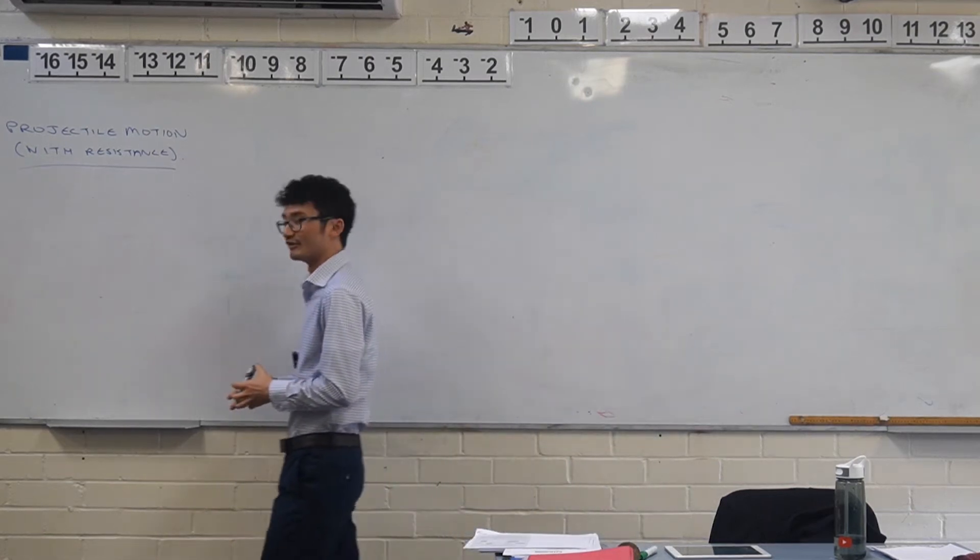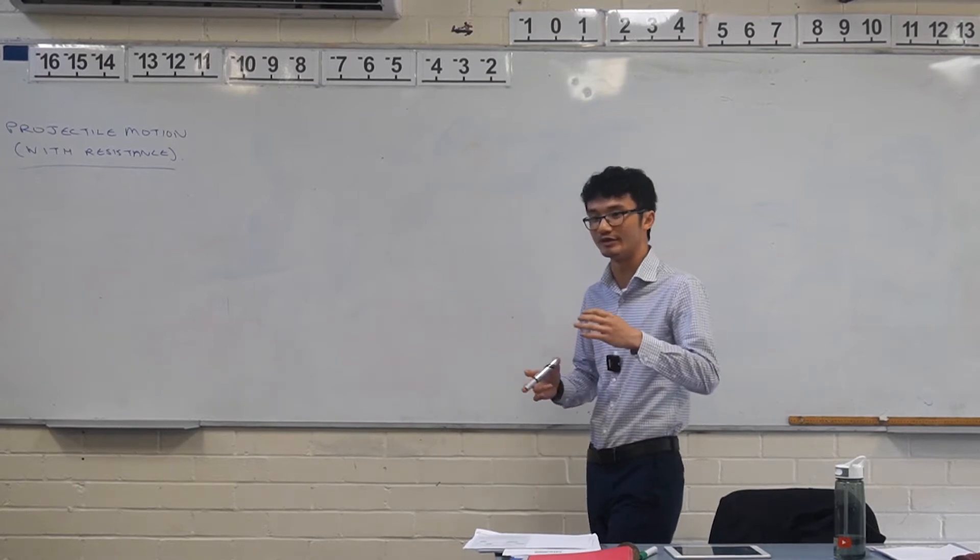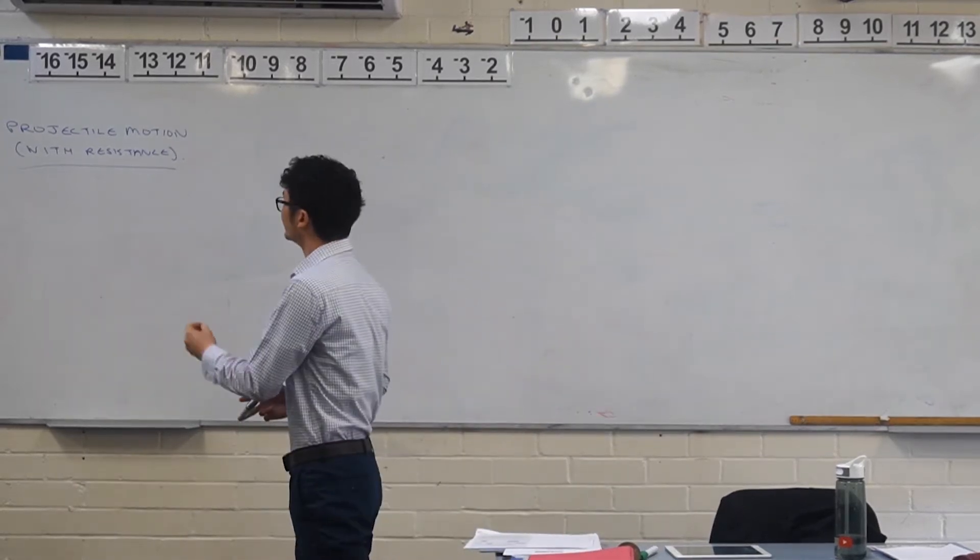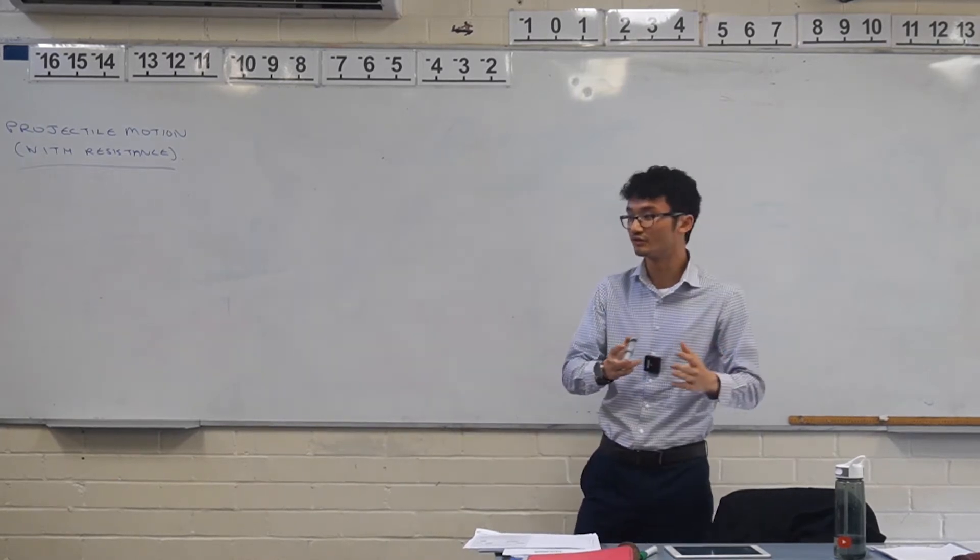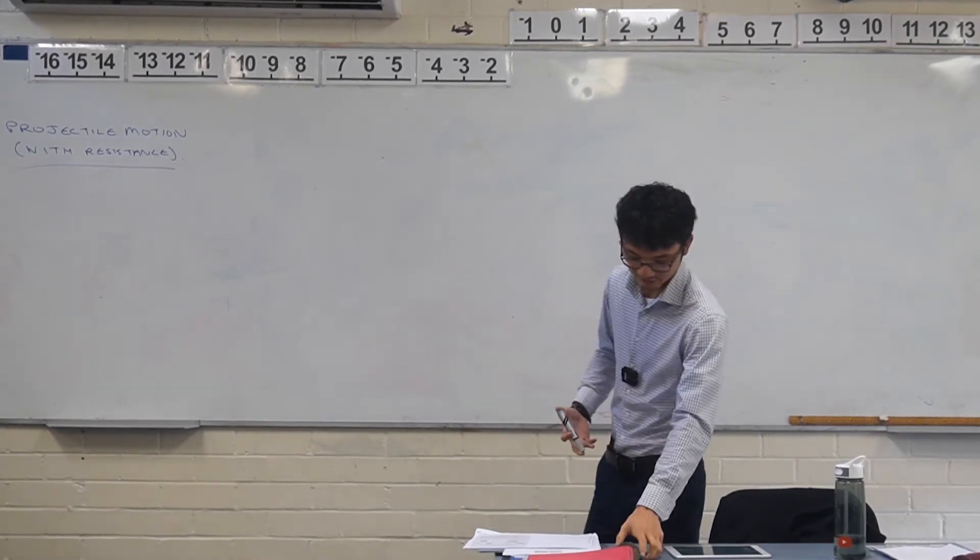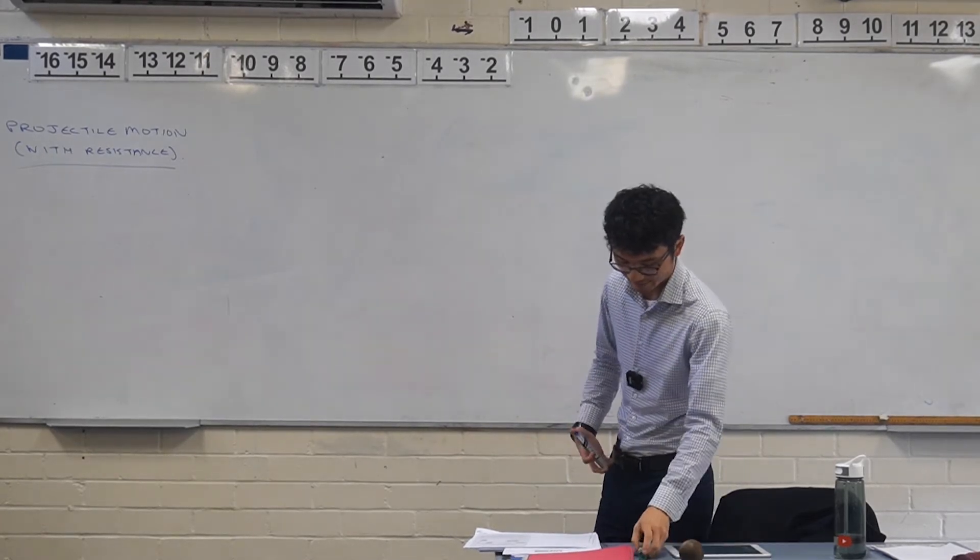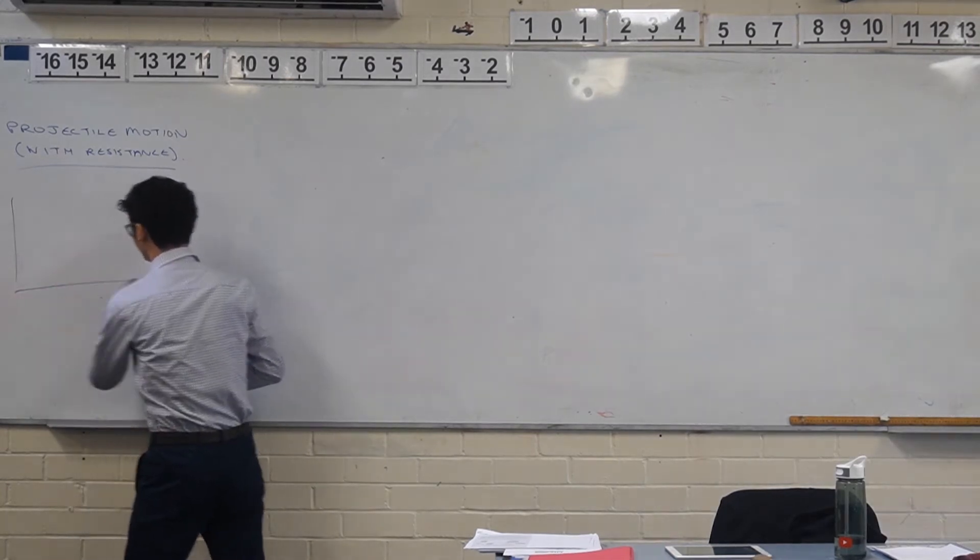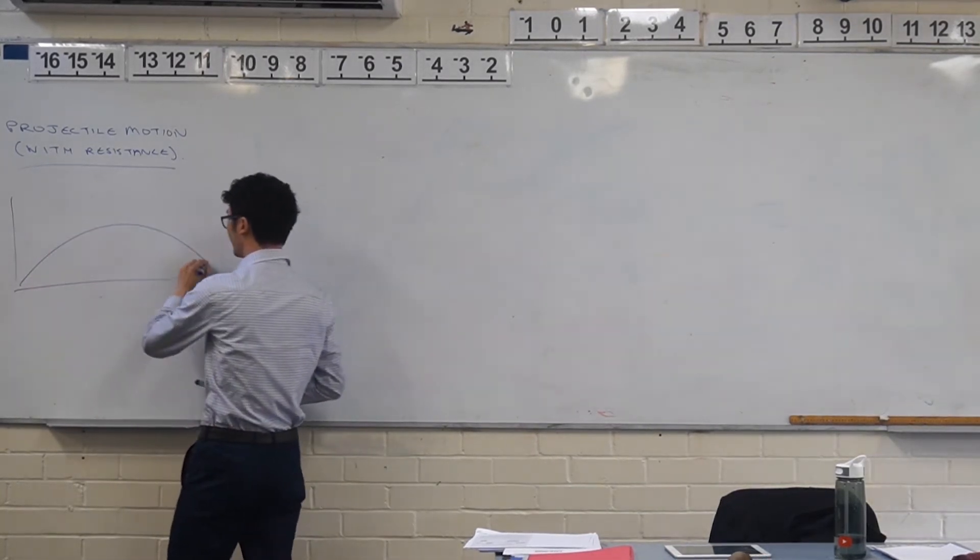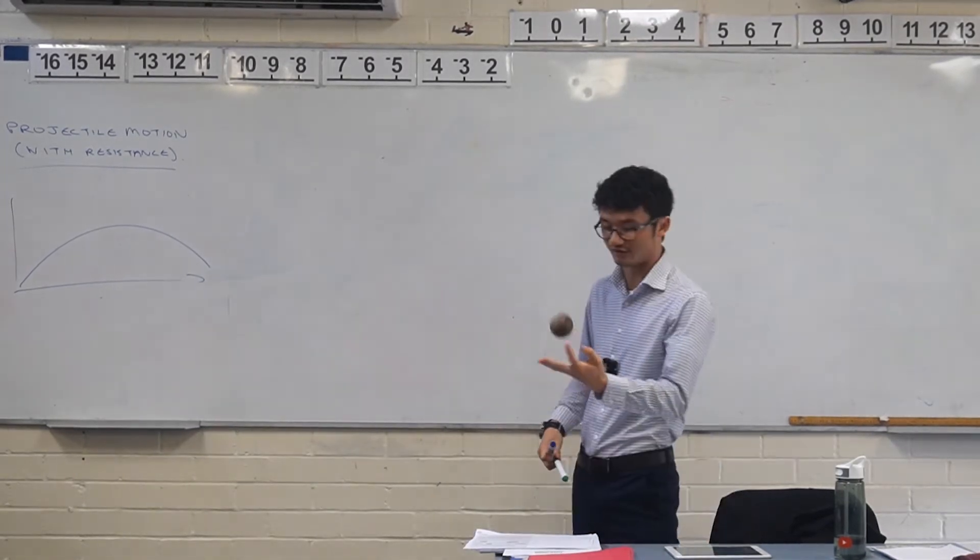We are at the end of our projectile motion unit and we've been looking at how we can consider resistance in the vertical and horizontal directions. Just something to get you thinking: if we have a particle that's moving without resistance, we know that it creates that kind of parabolic shape.